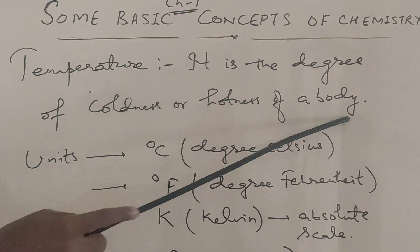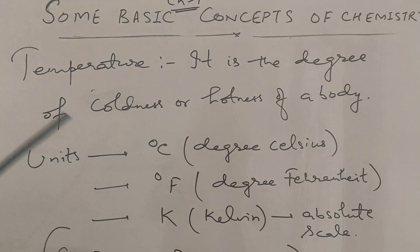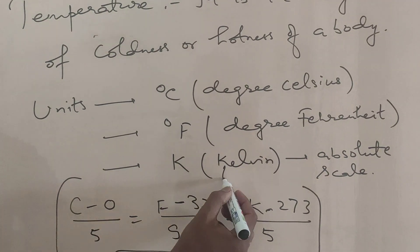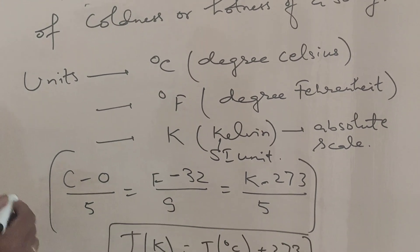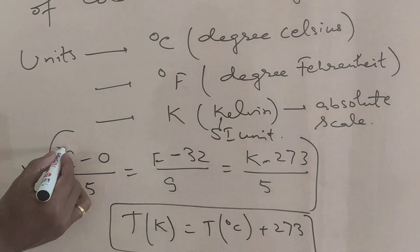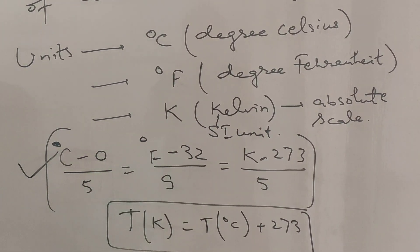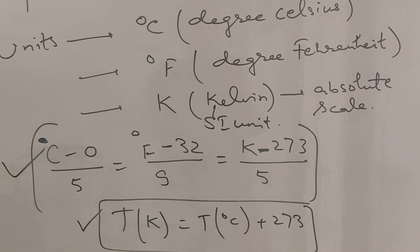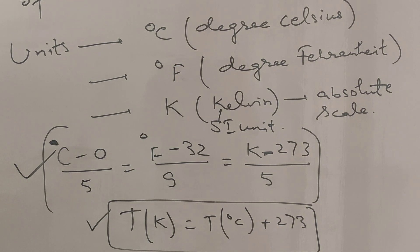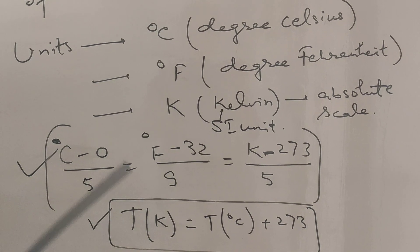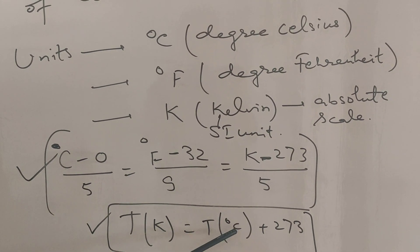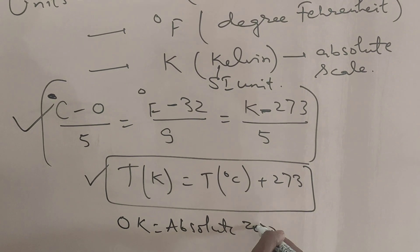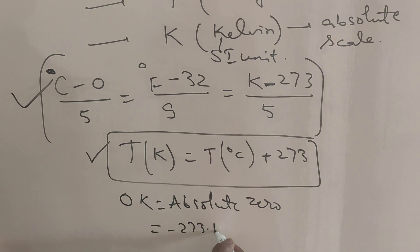Temperature is the degree of hotness or coldness of a body. Common units are degree Celsius, degree Fahrenheit, and Kelvin. Kelvin is the absolute scale and is the SI unit — it has no degree sign. The relationship between them is: (°C − 0)/5 = (°F − 32)/9 = (K − 273)/1. Temperature in Kelvin equals temperature in Celsius plus 273. Zero Kelvin is called absolute zero, which corresponds to −273.15°C — the point where the volume of a substance becomes zero.